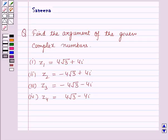Hello and welcome to the session. In this session we will discuss a question which says: find the argument of the given complex numbers. First part is Z1 = 4√3 + 4i. Second part Z2 = -4√3 + 4i. Third part Z3 = -4√3 - 4i. And fourth part Z4 = 4√3 - 4i.